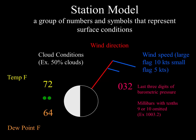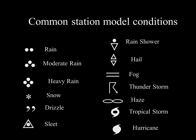A long barb represents 10 knots, and a short barb represents 5 knots — simply add the barbs up to find the wind speed. Finally, on the left-hand side between the temperature and dew point, there may be present weather conditions. Dots represent moderate or heavy rain; if those dots are replaced by asterisks, that indicates snow is falling. Up and down triangles may represent hail. Horizontal lines represent fog. The graphic for thunderstorms may represent a cloud with lightning. And of course, we have symbols for tropical storms and hurricanes. There are many more station model condition symbols than what is represented here.